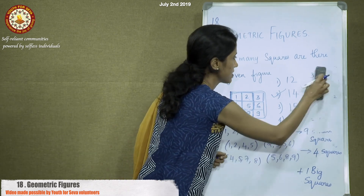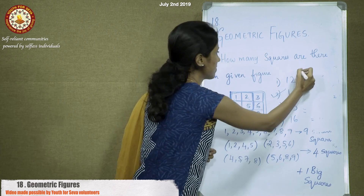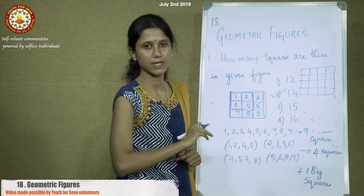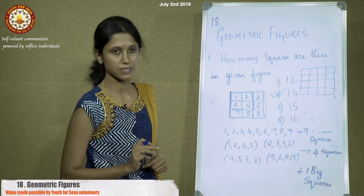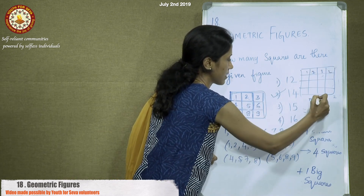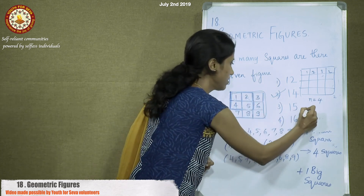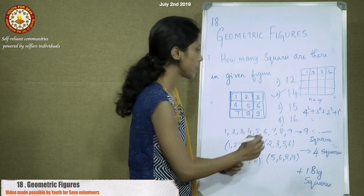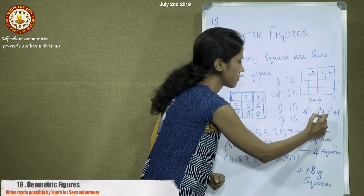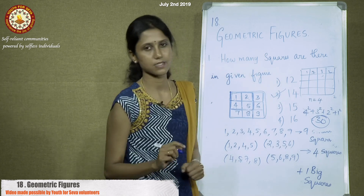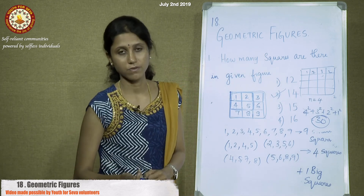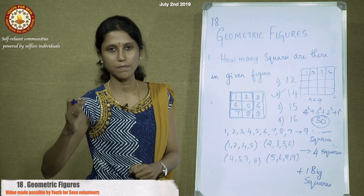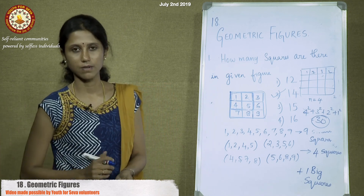The complexity increases for a 4×4 grid. Instead of labeling, just find n — here n is 4. Start with 4²: 4² + 3² + 2² + 1² = 16 + 9 + 4 + 1 = 30. So 30 squares are there in a 4×4 square grid. You can apply this for 5×5, 6×6, any n×n — start with n², then (n−1)², (n−2)², and so on down to 1².